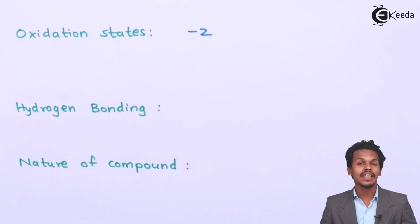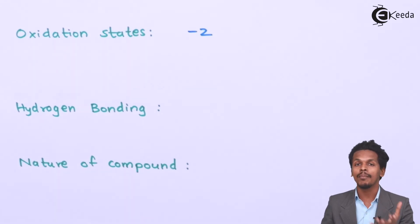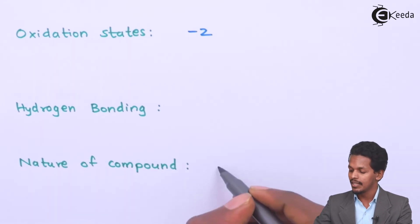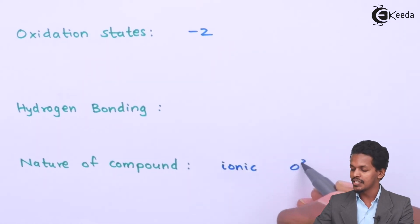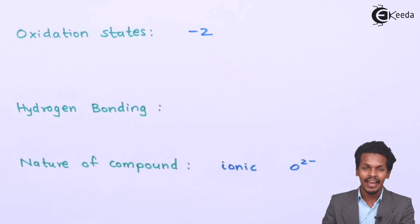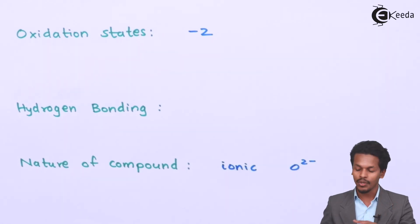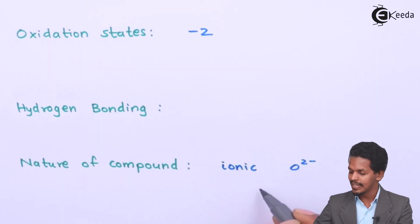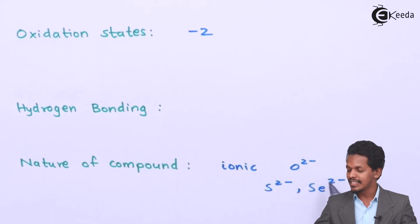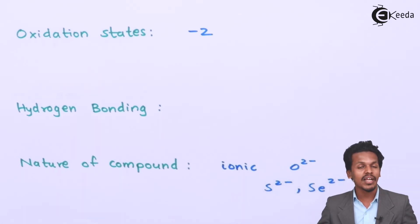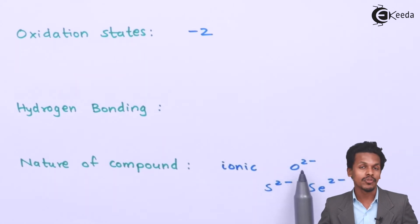The next point is the nature of the compound. Because oxygen is more electronegative, the compounds formed are basically ionic in nature due to oxygen's -2 oxidation state. In contrast, compounds like H₂S or S²⁻ are not as ionic in nature compared to oxygen-containing compounds.